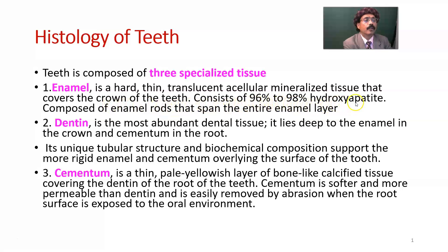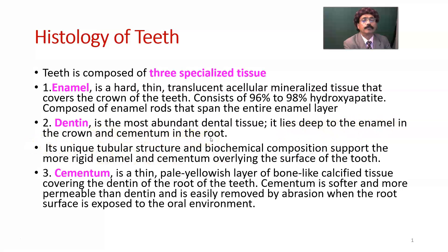Enamel is composed of calcium hydroxyapatite crystals and is composed of enamel rods that span the entire enamel layer. Dentin is the most abundant dental tissue. It lies deep to the enamel in the crown and deep to the cementum in the root. Its unique tubular structure and biochemical composition support the more rigid enamel and cementum overlying the surface of the tooth.